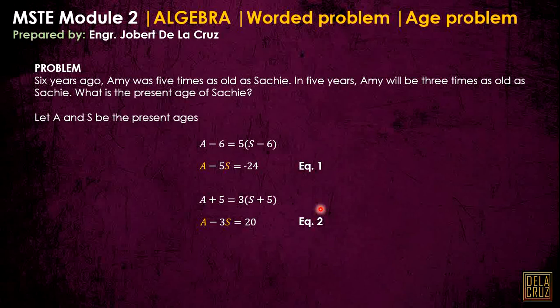Grab your calculator. Two equations, two unknowns, and we have these values. The answer we need is the age of Sachi.